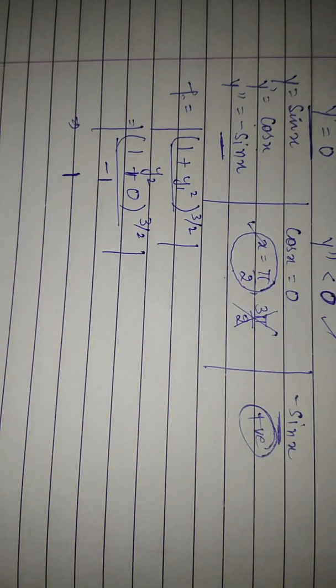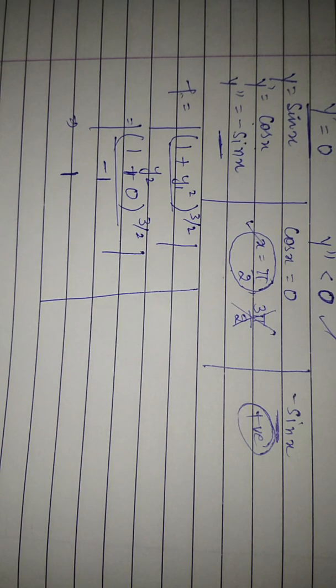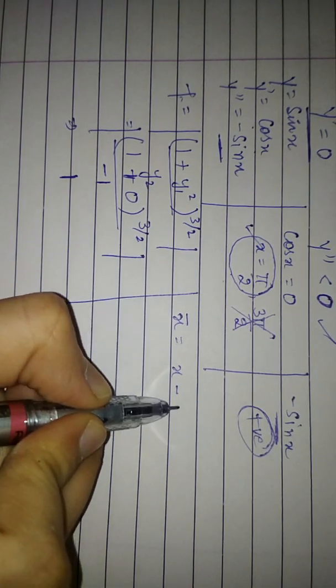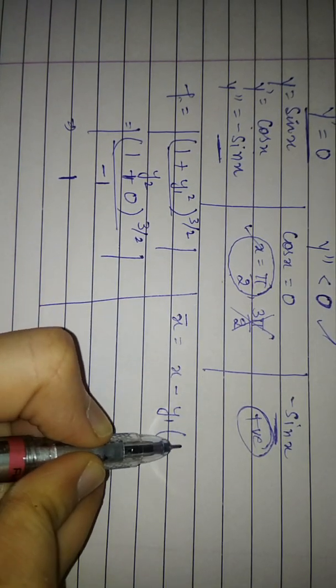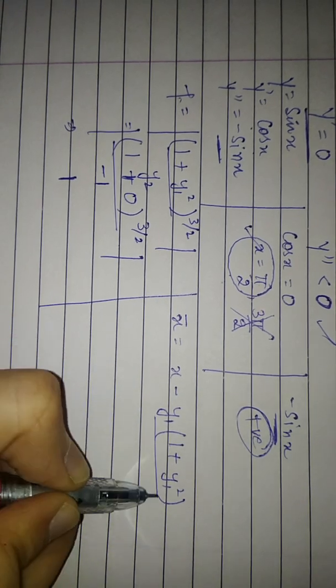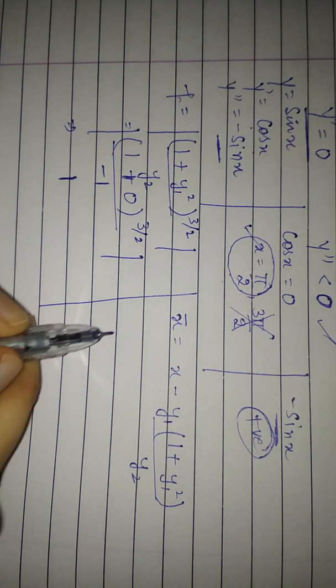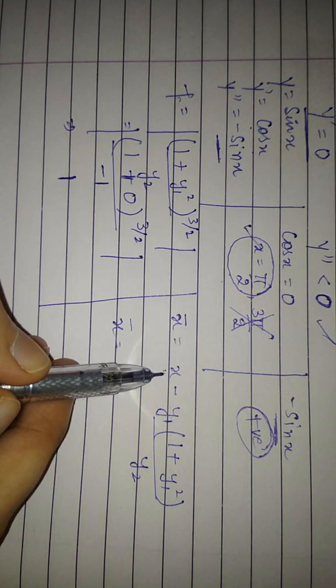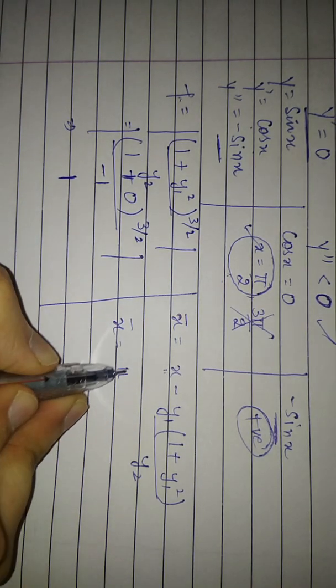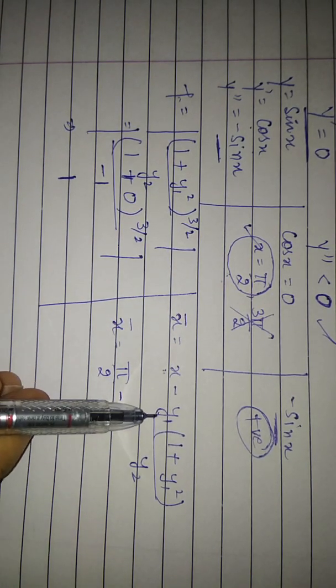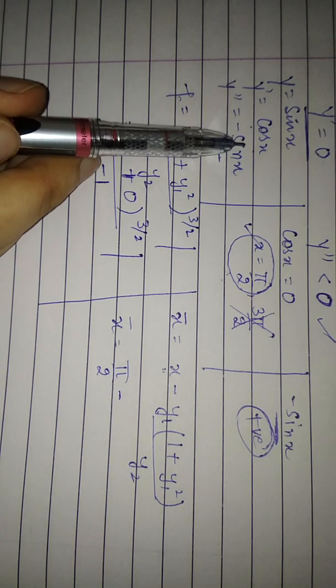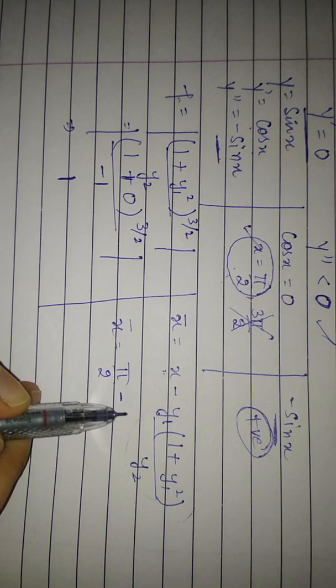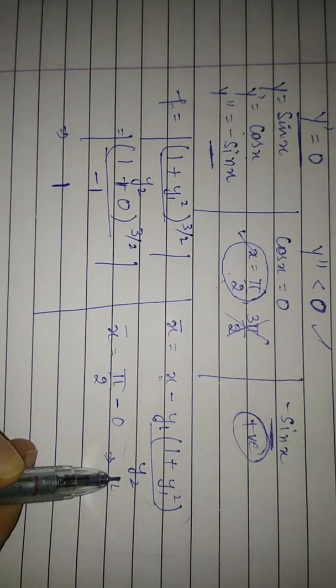Now we have to find the center of curvature. For center of curvature, x̄ equals x minus y₁(1 plus y₁²) upon y₂. So here also you have to put the values. Now here this x, we will use the value of π by 2. π by 2 minus y₁. Now y₁ is cos x and cos x at π by 2 is 0. So this whole term will become 0. We don't need to write this. So it will be π by 2.